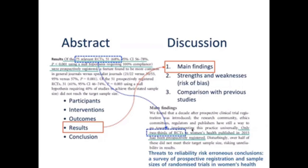Numbers can be easily converted into words from the abstract into the discussion. Another example: 61% of the prospectively registered papers had a particular feature, and we can simply say over half of the papers did not meet the target sample size. Numbers from the abstract should be converted into words to write the first paragraph of the discussion.